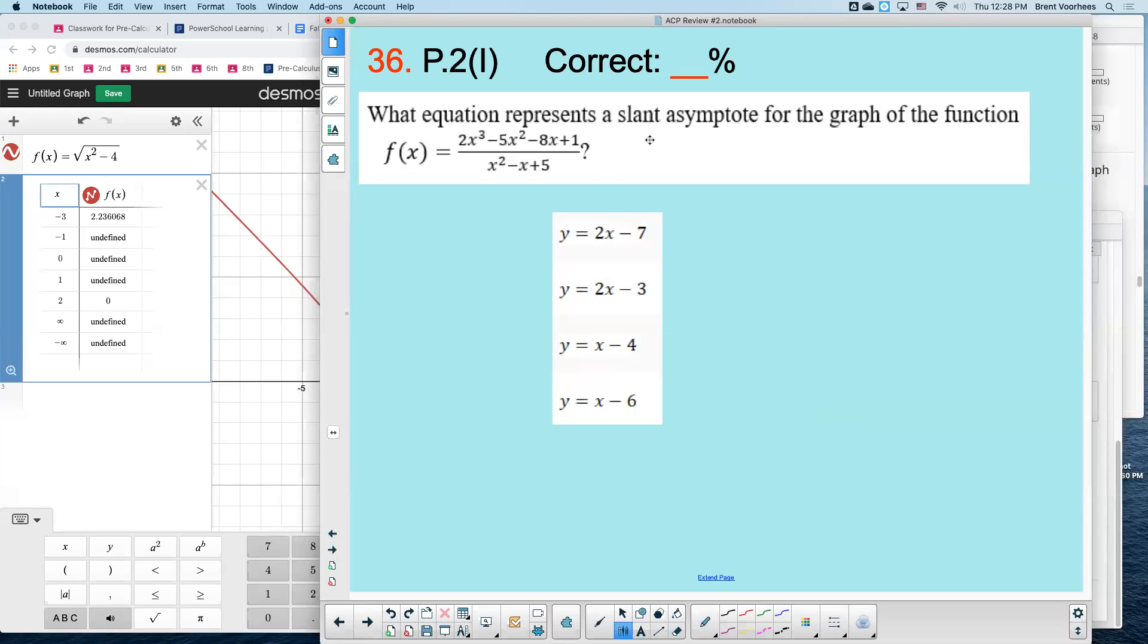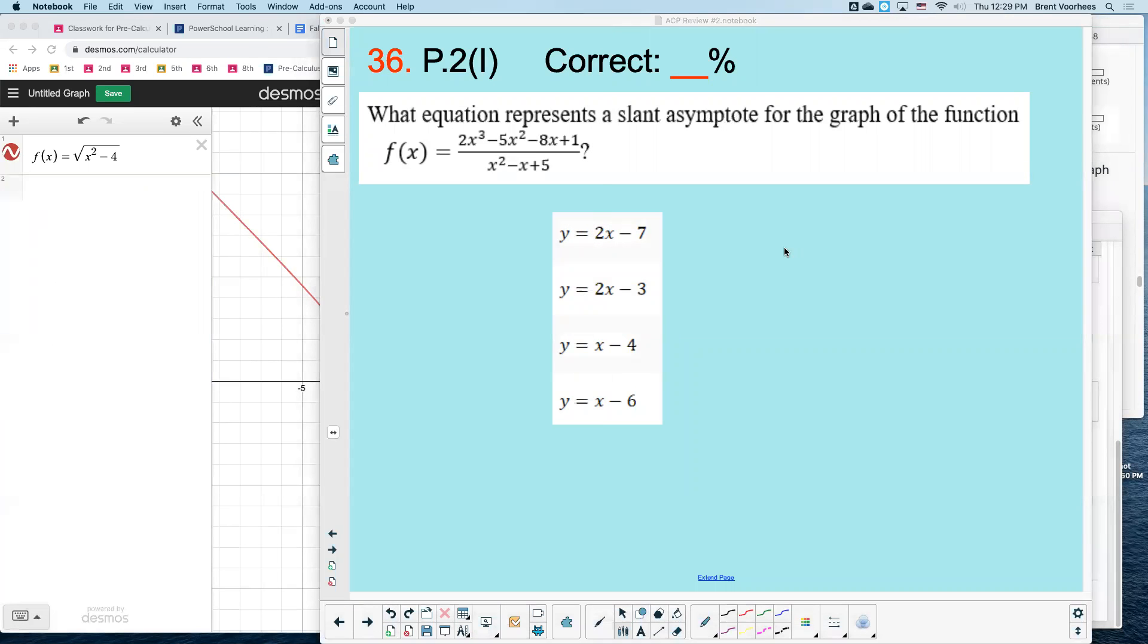All right, now we're going to briefly look at asymptotes. Asymptotes are when the graph, a lot of times it breaks, but it doesn't have to be a break, but it's when that graph will get really, really straight or flat or approach something. It's going to approach a value. So this problem here, it says,